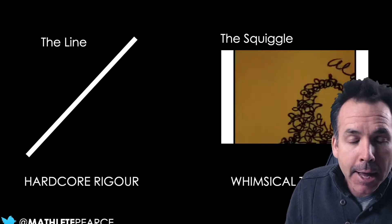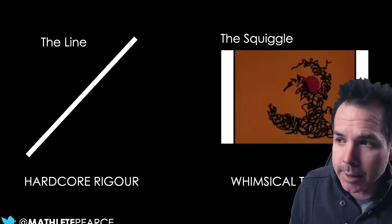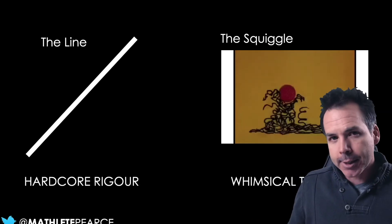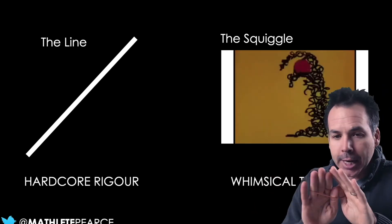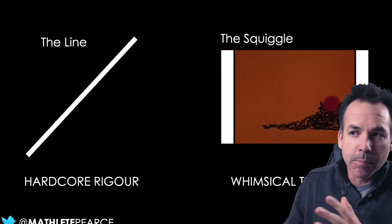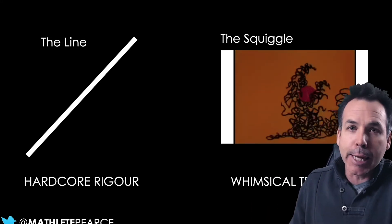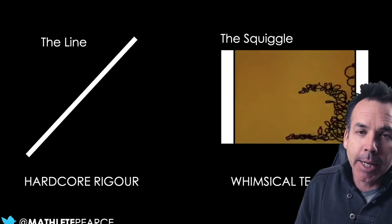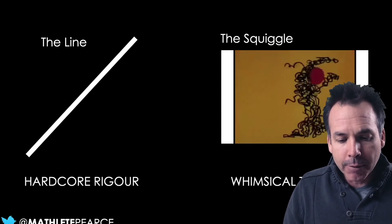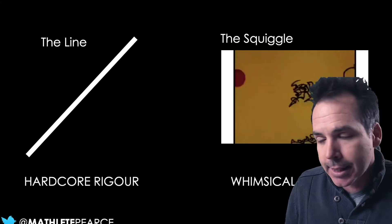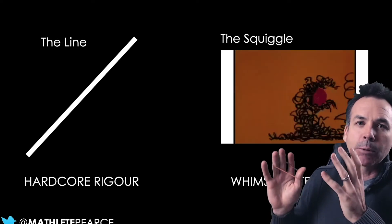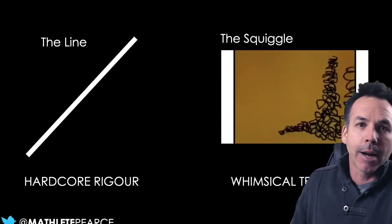Sometimes you think that in math class we need to be like the line — rigorous — because we want to teach students to be problem solvers with great thinking. I thought this way for a long time, thinking the fun stuff happens in other classes, that's like the squiggle: whimsical teaching where kids love you but you're not actually helping them much in mathematics. There's this dichotomy where we think we have to be the line or the squiggle — we can't do both. We can't get great thinking and cover the curriculum at the same time. It can't be problem-based lessons or discovery learning because we can't cover the curriculum that way.